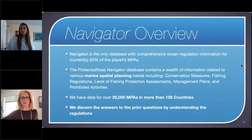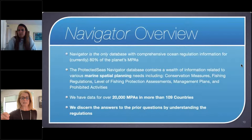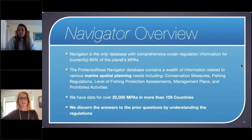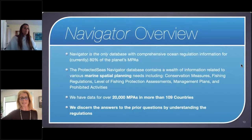Navigator is the only database with comprehensive ocean regulation information for more than 80 percent of the planet's MPAs. There's a wealth of information related to marine spatial planning, conservation measures, fishing regulations, level of assessments, and management plans. We have data for over 20,000 MPAs in more than 109 countries, including the U.S. This has been done over the last seven years by a dedicated team, and it's now available for consumption.